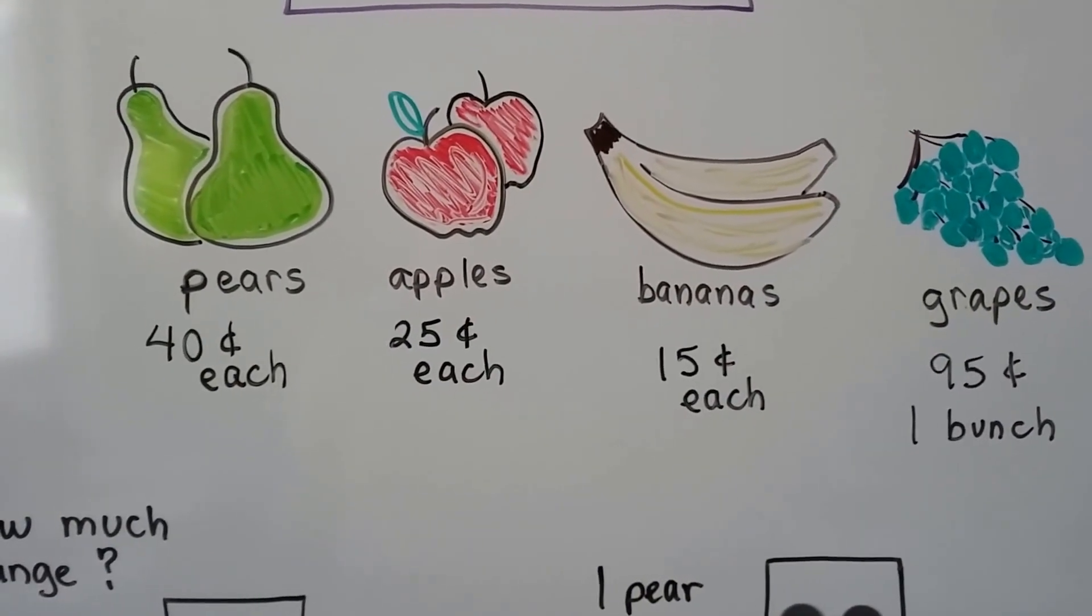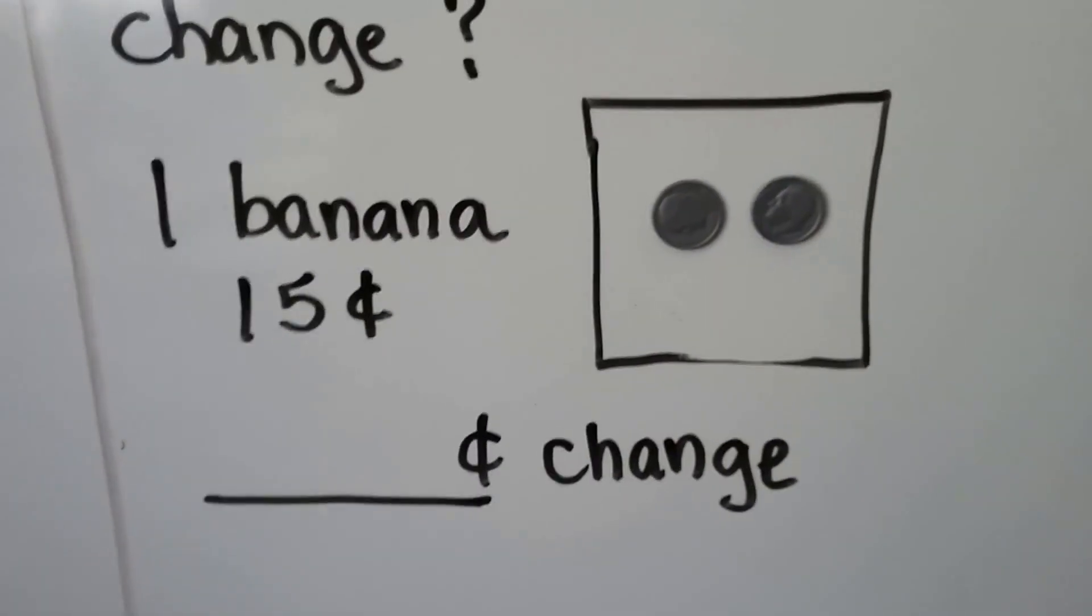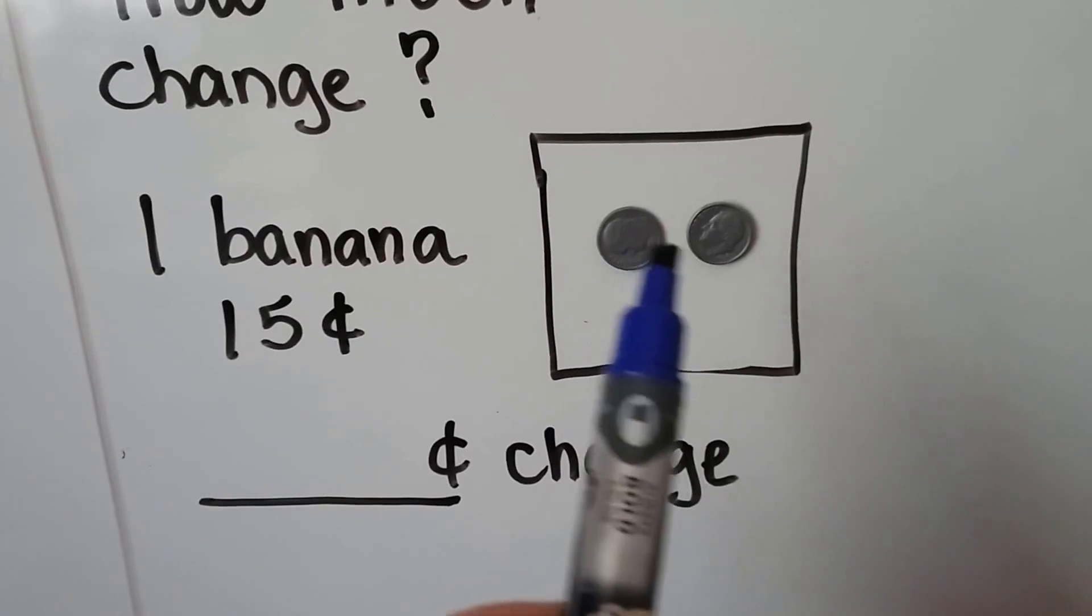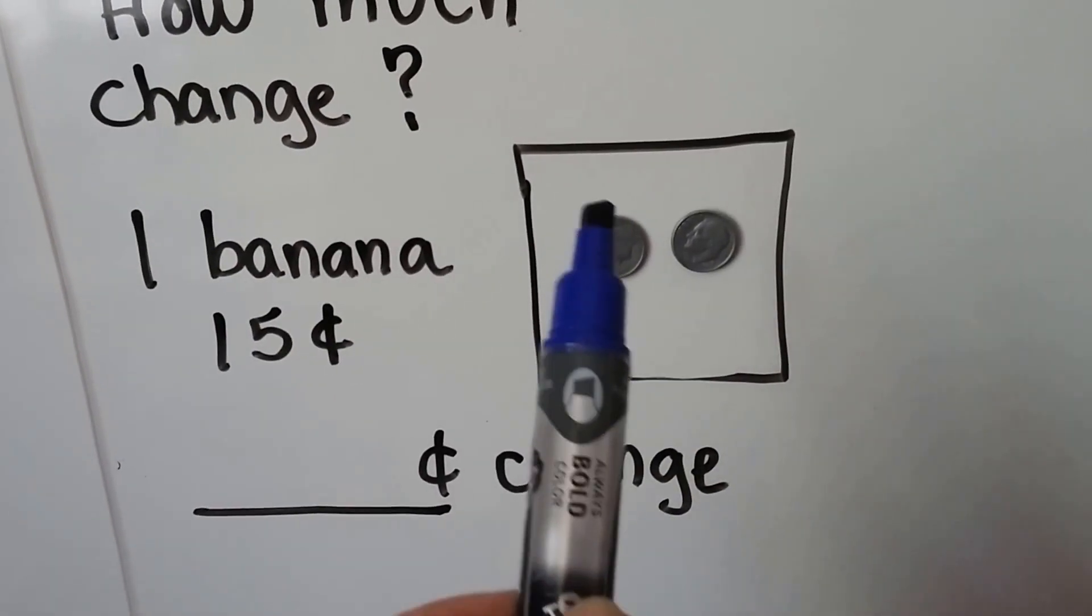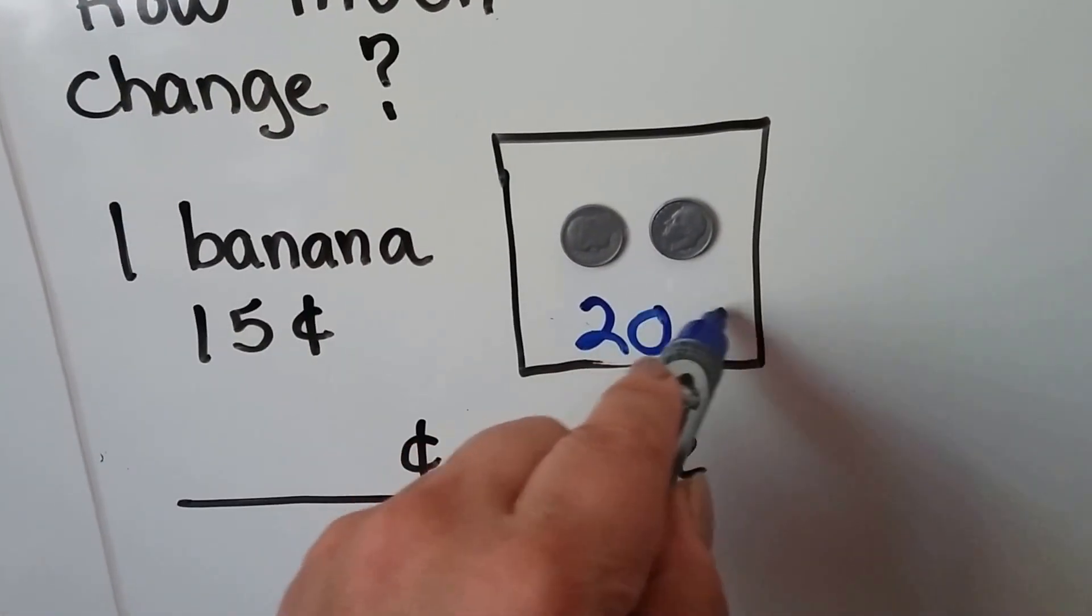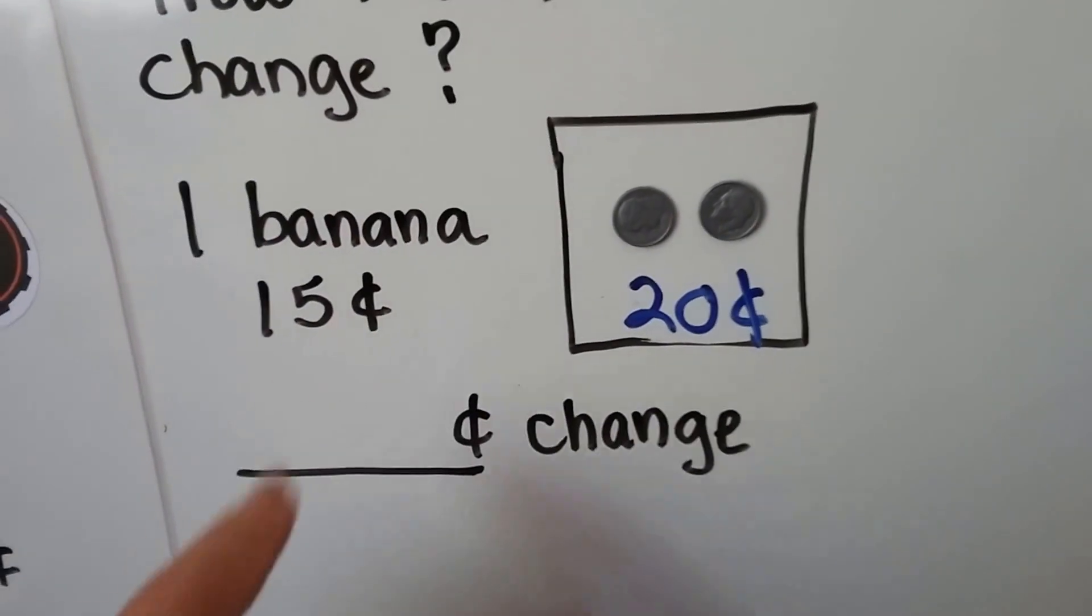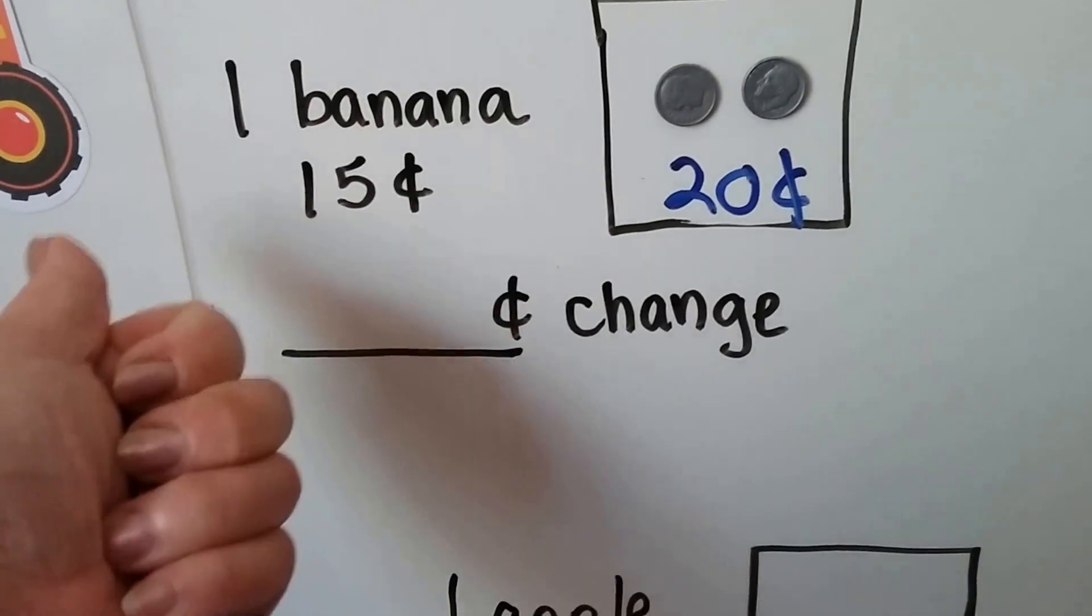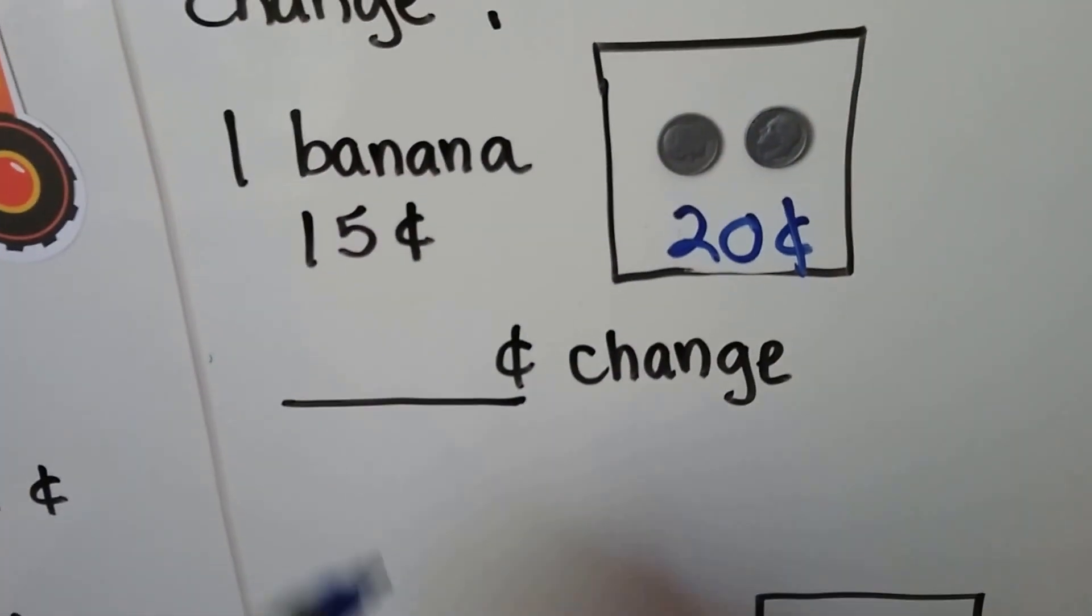So how much change would we get back if we bought one banana and we gave the cashier two dimes? Remember, a dime is 10 cents, so we have 10, 20. We have 20 cents here that we gave. The banana costs 15 cents. You start at the 15 and you count up to 20: 16, 17, 18, 19, 20. That's five cents change.